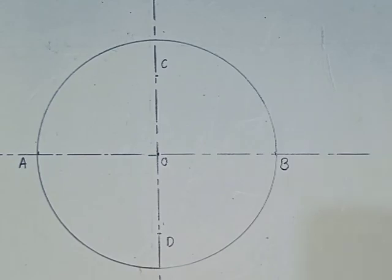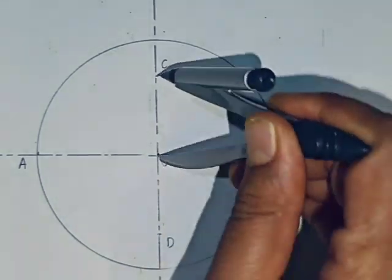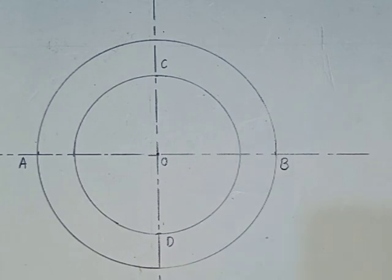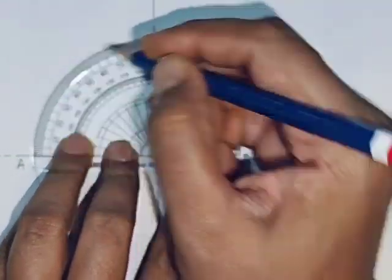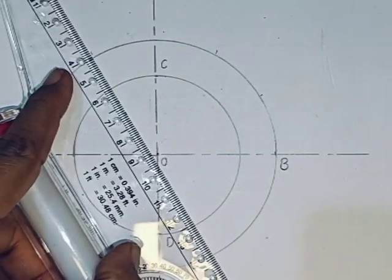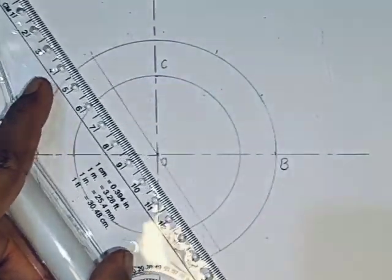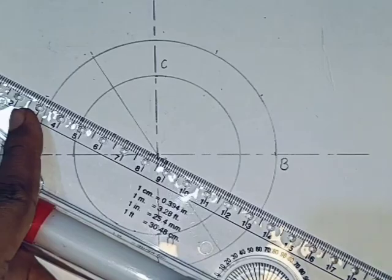These are the two concentric circles with center O. Divide the outer circle into 12 equal parts; at the same time the inner circle also gets divided into 12 equal parts.